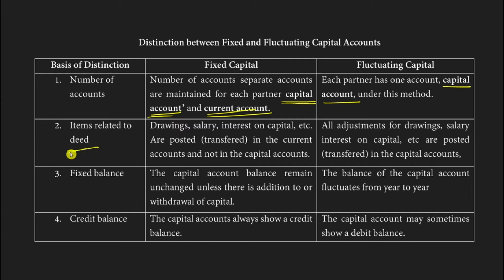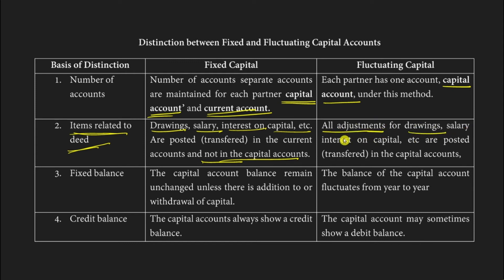The next distinction is related to deed items — things like drawings, salary, and interest on capital. In the fixed capital method, all these adjustments are transferred to the current account, not the capital account. In the fluctuating method, all adjustments for drawings, salary, and interest on capital are transferred to the capital account only, because there is no current account.